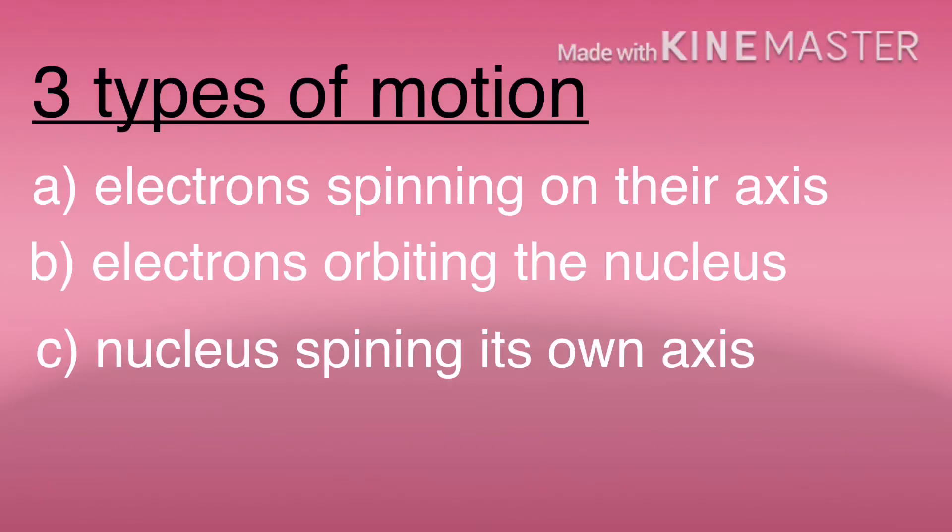There are three types of motion present within the atom. The first one is electrons spinning on their own axis. The second one is electrons orbiting the nucleus. The third one is the nucleus itself spinning about its own axis. We need the third spinning motion, that is the protons and neutrons spin.